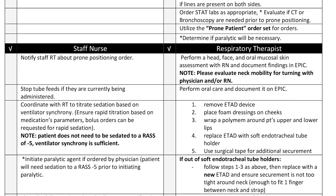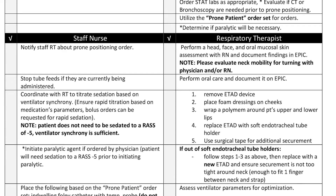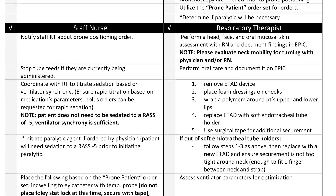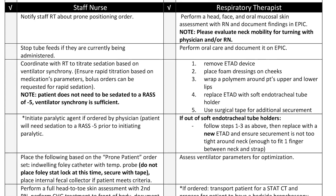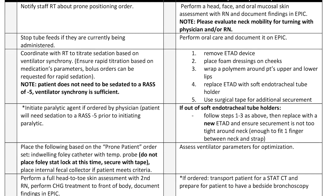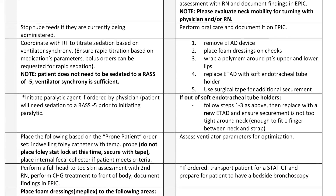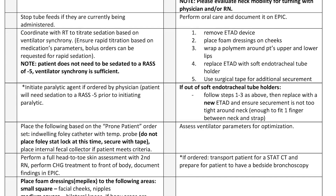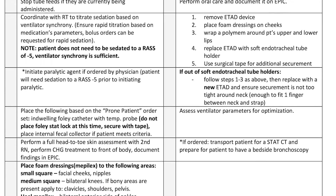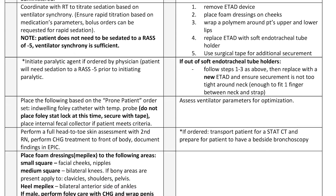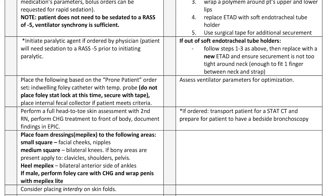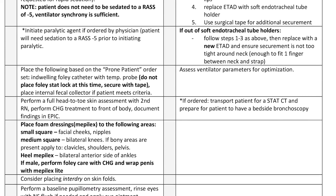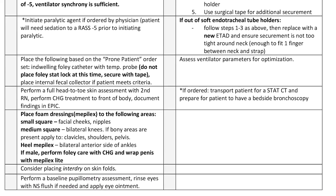The patient should be sedated according to ventilator synchrony. If the patient is sedated to a RASS of negative 5 and continues to display dyssynchrony, a paralytic can then be administered. A head-to-toe skin assessment should be completed, documented, and foam dressings placed on bony prominences. Neck mobility should be assessed, and a new endotracheal tube holder should be placed with foam dressings under the holder on the cheeks to give added protection to the skin.